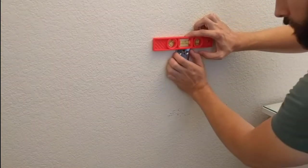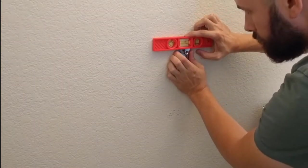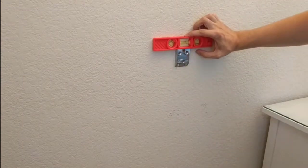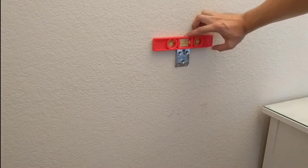Next, use a level on top of the mounting plate to pivot the plate until just level. Keep the level there while you install the top screws.